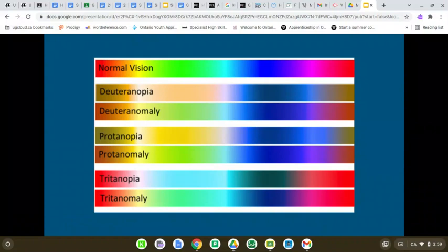There are four types of red-green colorblindness: deuteranomaly, protanomaly, protanopia, and deuteranopia. There are two types of blue-yellow colorblindness: tritanomaly and tritanopia. And there are two types of complete colorblindness, which are both extremely rare: cone monochromacy and rod monochromacy.